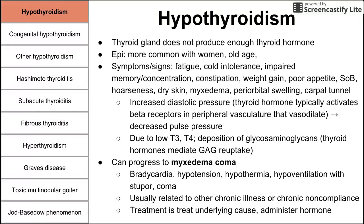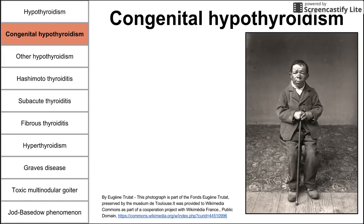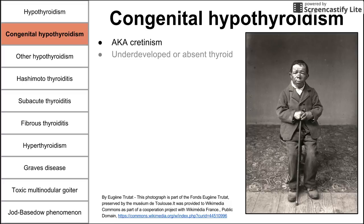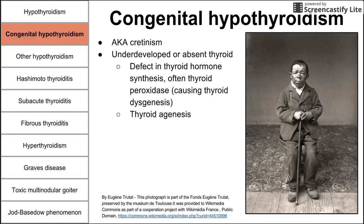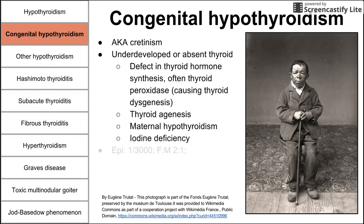Treatment is to find the underlying cause and administer thyroid hormone. Another cause is congenital hypothyroidism, also known as cretinism — a term now considered offensive. These patients have underdeveloped or absent thyroids due to causes such as defects in thyroid hormone synthesis (often thyroid peroxidase), thyroid agenesis, maternal hypothyroidism during pregnancy, or iodine deficiency.